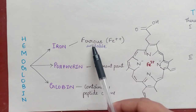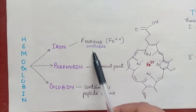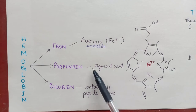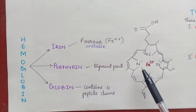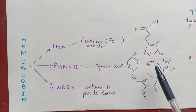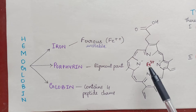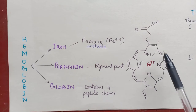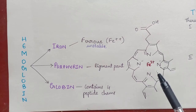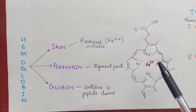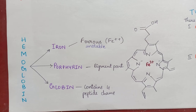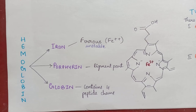Iron is normally present in ferrous form, which is unstable. The pigment part is called porphyrin, and it is formed by four pyrrole rings. The pyrrole rings are attached to one another by methane bridges. The iron is attached to the nitrogen of each ring and the nitrogen of each globin molecule.